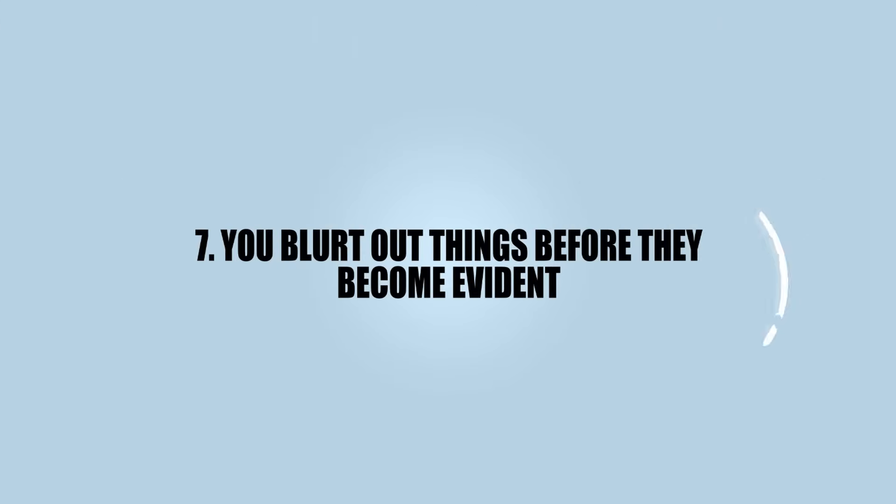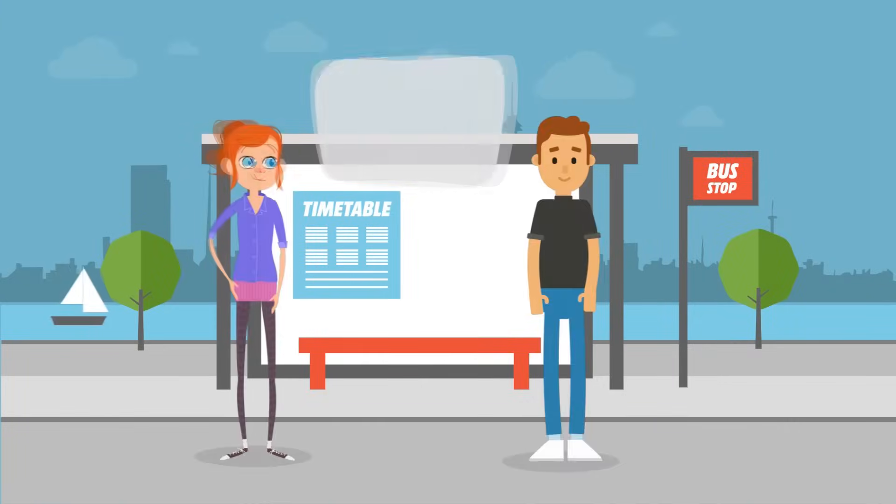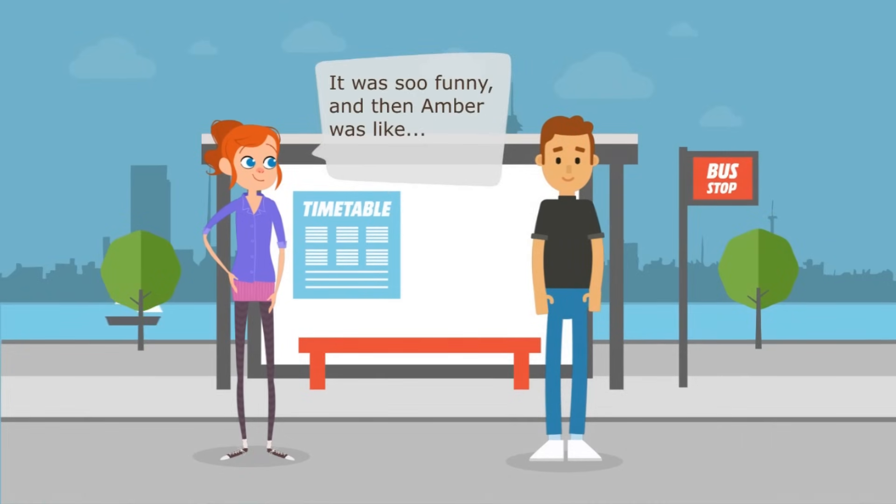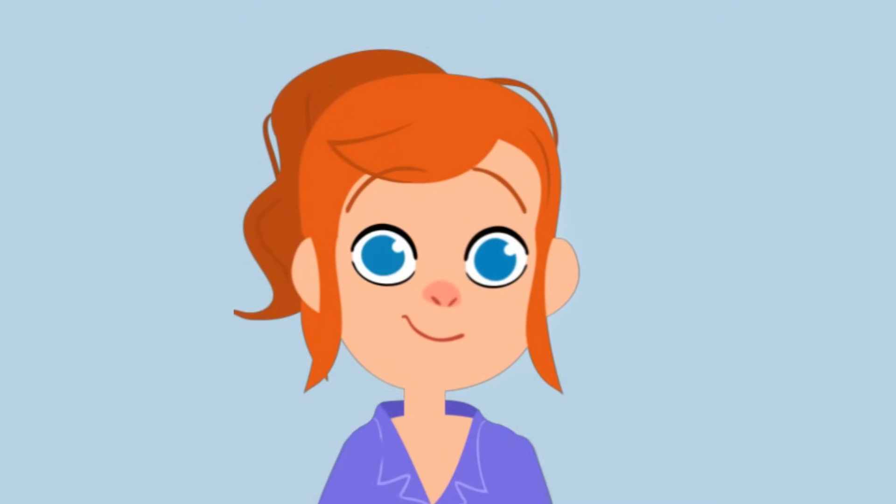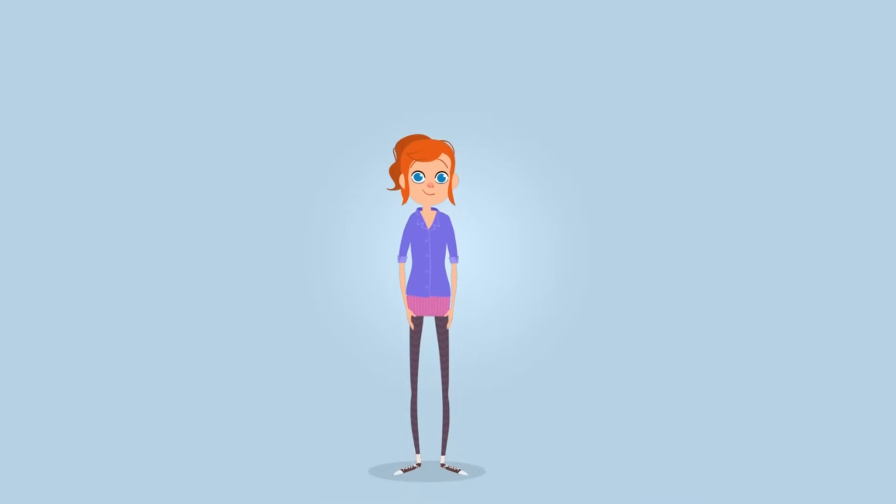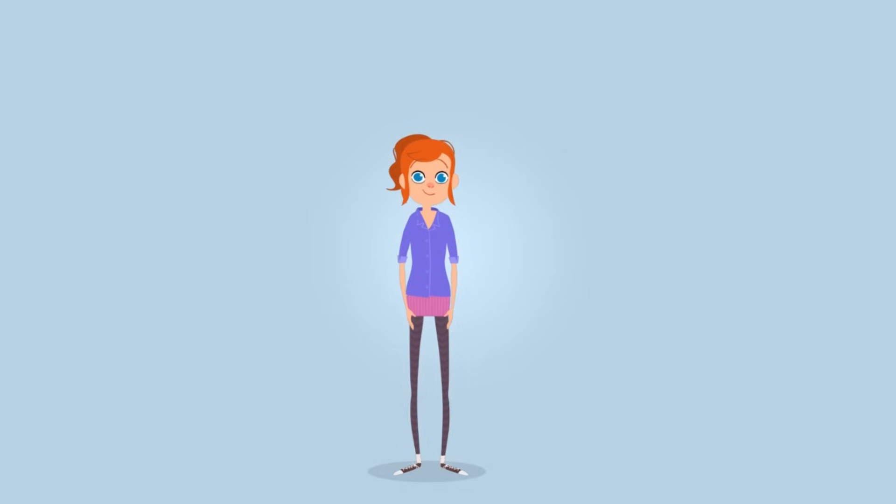Number seven: you blurt out things before they become evident. Now, even though this might sound like the last one, there's a fundamental difference. What this means is that you know what people are going to say before they say it, often finishing their sentence. Again, this could annoy people because people are like, why are you finishing my sentence? But your thoughts are just faster than their mouths. Whoa, what? Guys, don't be like my friend here. Yeah, that came out wrong. Sometimes this can even give you the upper hand in social situations. Nice wig, Janice. What's it made of? Your mom's chest hair. That gets me every time.